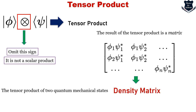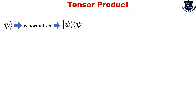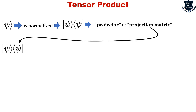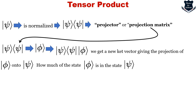If a state is normalized and we form the tensor product of it with itself, the result is called a projector or projection matrix. When we apply this projection matrix to a ket vector, we get a new ket vector that gives the projection of one state onto another. This tells us how much of one state, say phi, is contained in another state, say psi.